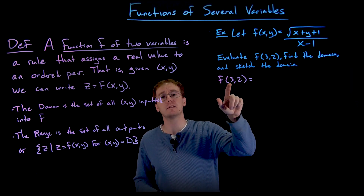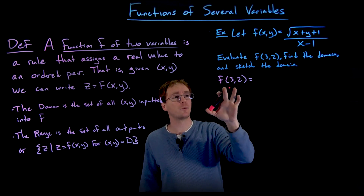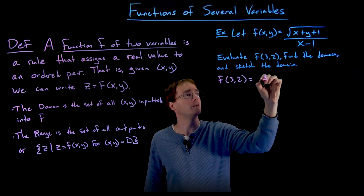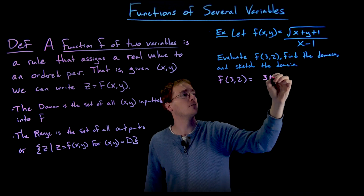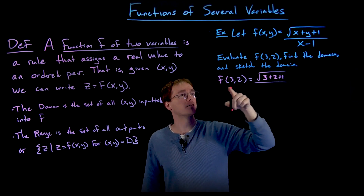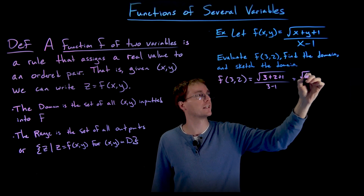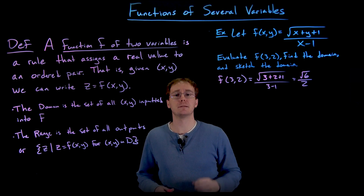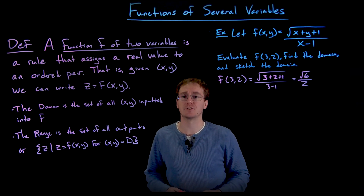To evaluate f(3, 2), we replace x with three and y with two. So the numerator becomes the square root of three plus two plus one, and the denominator is three minus one. Simplifying, we get the square root of six over two. So when the input is the point three comma two, the output — the z value — is the square root of six over two.